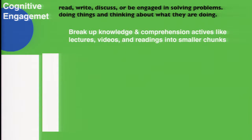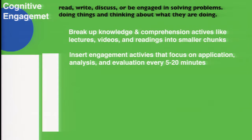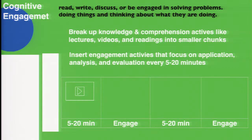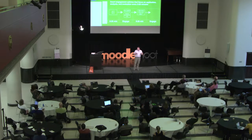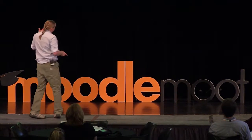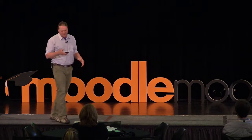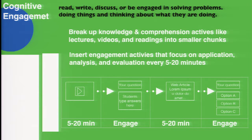Basically, you break up knowledge and comprehension activities into smaller chunks and insert engagement activities in between those chunks of content. You might give a student an online video for five to twenty minutes, then engage them — maybe write an essay or do a multiple-choice question carefully designed to help them engage with that content. Then you send them back into a new piece of content, like a web article. After about five to twenty minutes, you engage them in some activity that forces them to think. If they have to respond to a question, they can't just ignore the material — they have to run it through their brain.